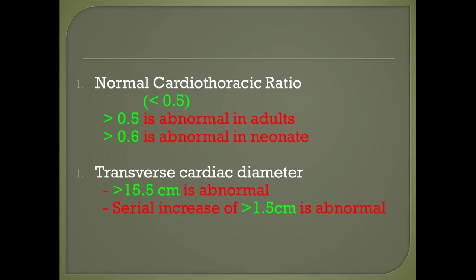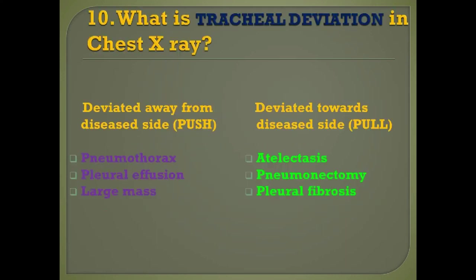Regarding the transverse cardiac diameter, if it is greater than 15.5 centimeters it is considered abnormal. Also, on subsequent follow-up X-rays, if there is a serial increase of greater than 1.5 centimeters, it is considered abnormal.